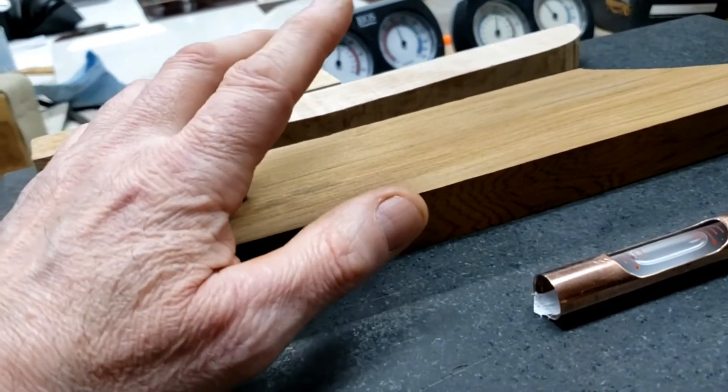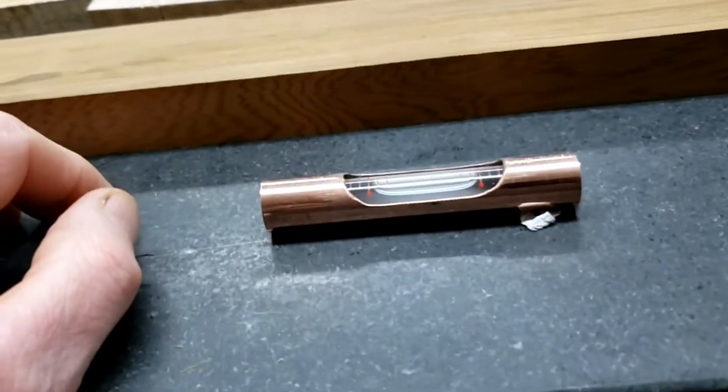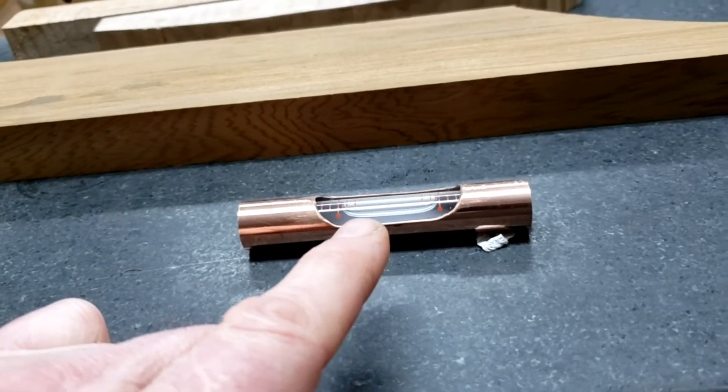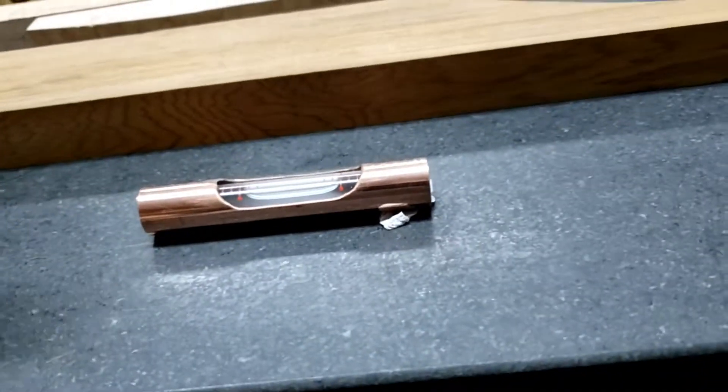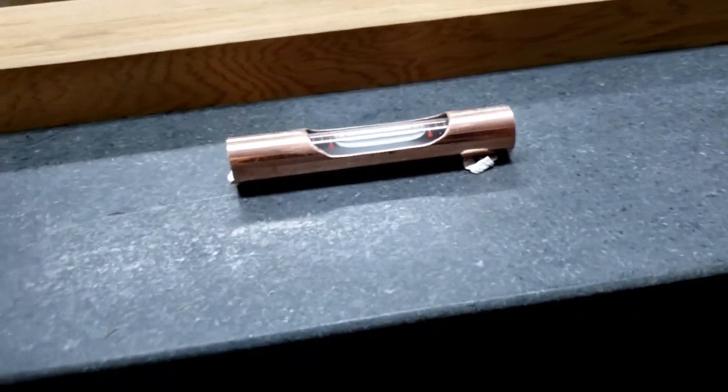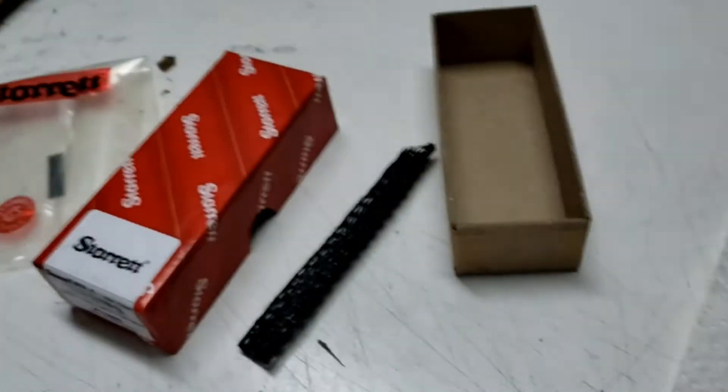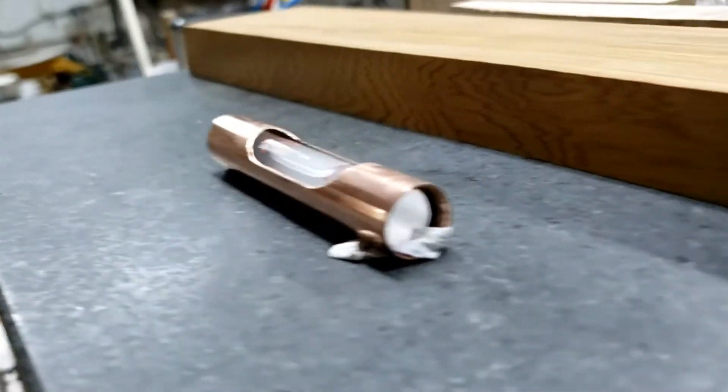So instead of spending 300 bucks, I'm going to spend probably 25, if all told. This thing, the vial itself cost me I want to say 20 bucks or so shipped here. And everything else I've got comes from my scrap bin. But if you were to go out and buy everything, a little small length of copper tubing, a couple of copper clamps, some ends, and a little bit of plaster of Paris to set it in there. That's what I'm about to do next.